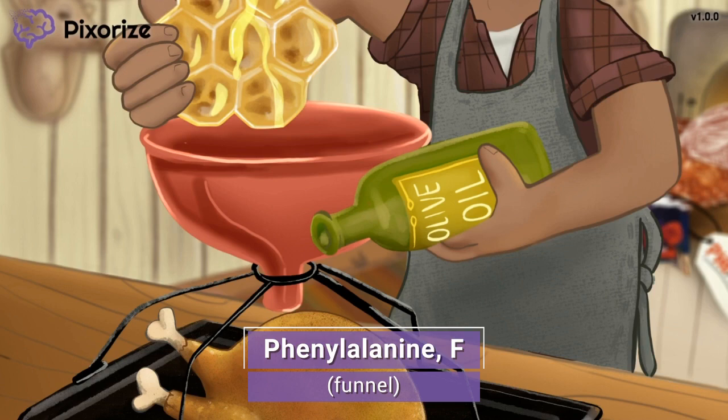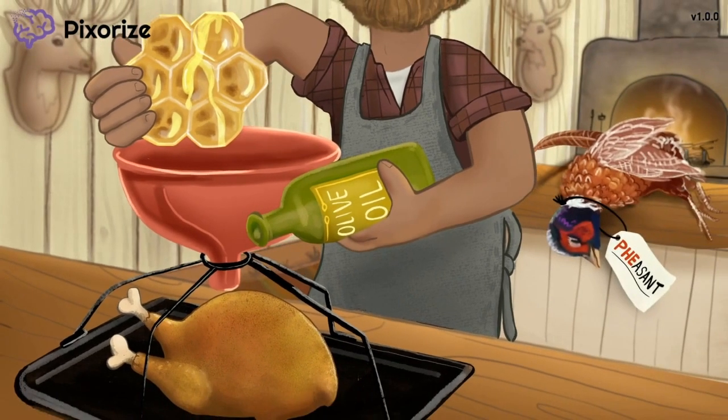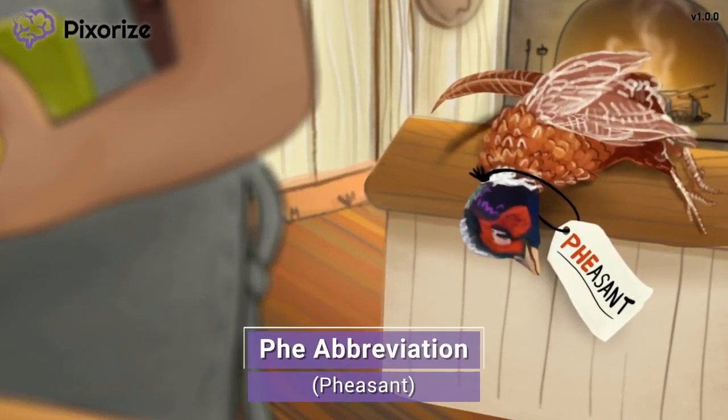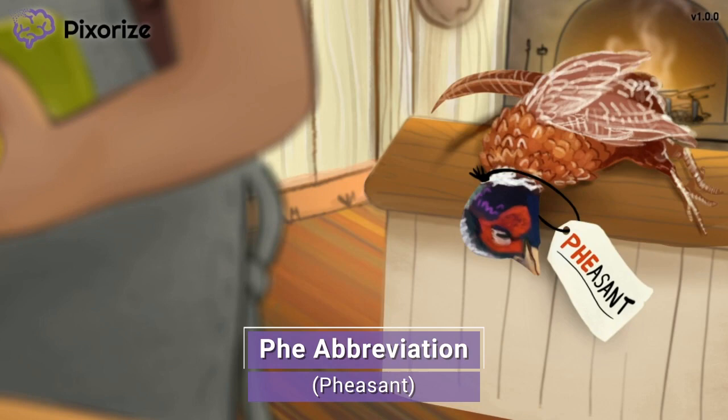Actually, there's another abbreviation of this amino acid name that we should touch on. Take a look at what's on the menu tonight. This chef happens to hunt in his free time, and it looks like he's caught a pheasant for dinner tonight. This pheasant is our symbol for P-H-E, the three-letter abbreviation for phenylalanine, since pheasant starts with P-H-E, right?